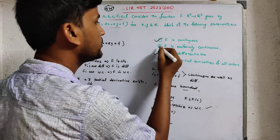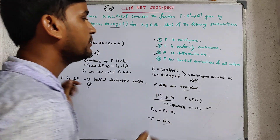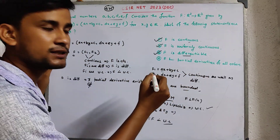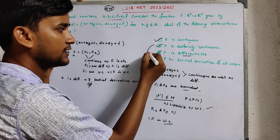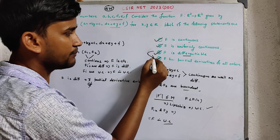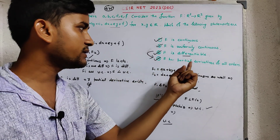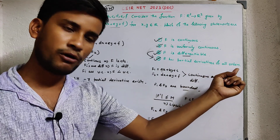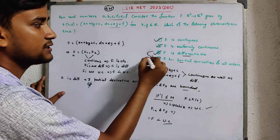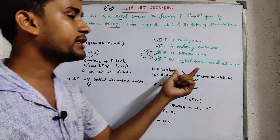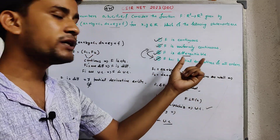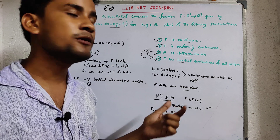Since F is differentiable, all partial derivatives of F exist. This option basically implies the others — since F is differentiable, the partial derivatives of all components exist. But the converse is not true: if all partial derivatives of F exist, we cannot conclude that F is differentiable.